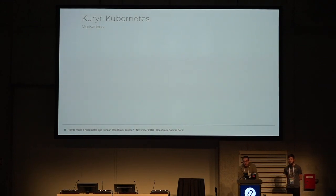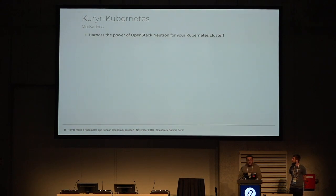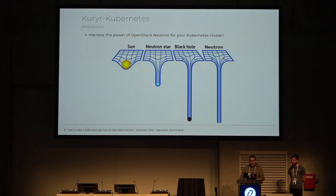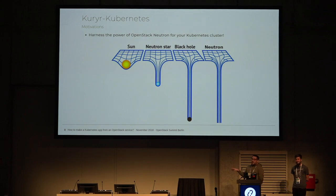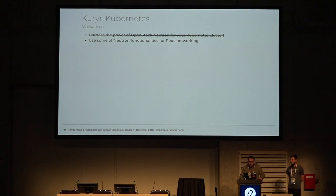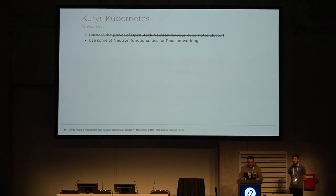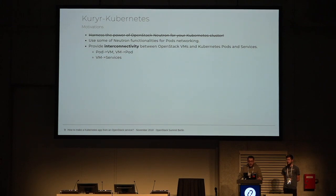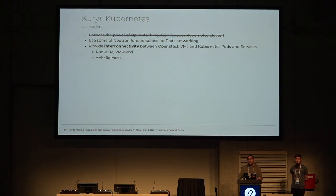So what are the motivations for Kuryr Kubernetes? First of all, we wanted to get the power of OpenStack Neutron for your Kubernetes clusters. We want to provide an interconnection between OpenStack VMs and Kubernetes pods and containers - so pod to VM, VM to pod, VMs to services, and to ingress controllers.